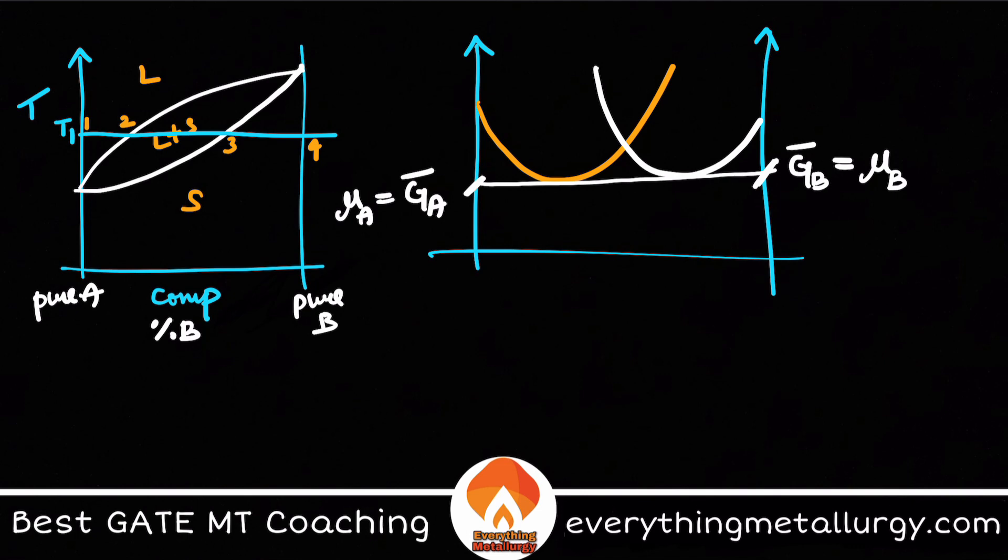So this is how we have constructed the G versus X curve. Now why in this particular manner, why is it intersecting like this? It's nothing but if you see these points over here, these points are nothing but my 1, 2, 3, and 4. So this is G versus X at this particular temperature T1.